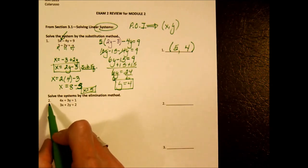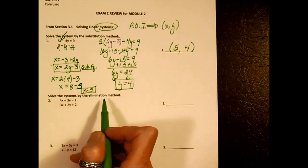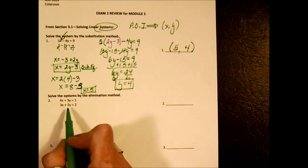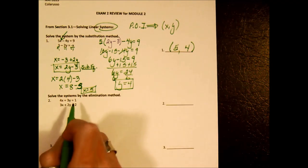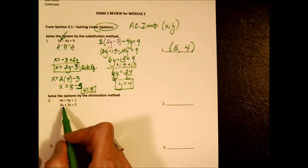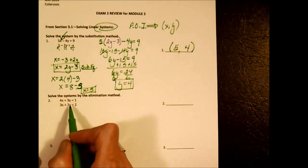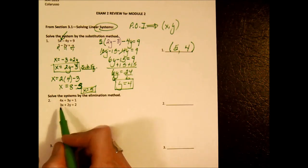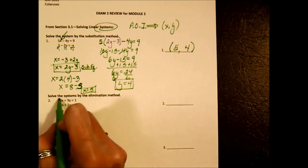Example 2 says to solve by using the elimination method. The elimination method works differently. We want to get rid of either the x's or the y's, and the way you do that is you make their coefficients the same except one's positive and one's negative.